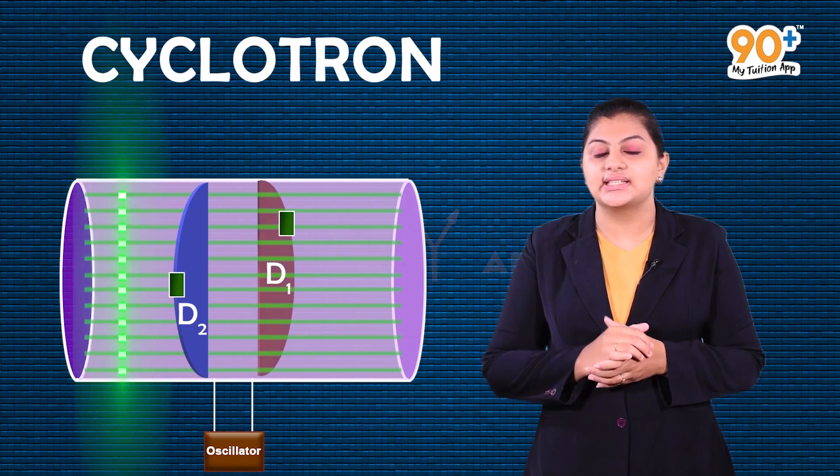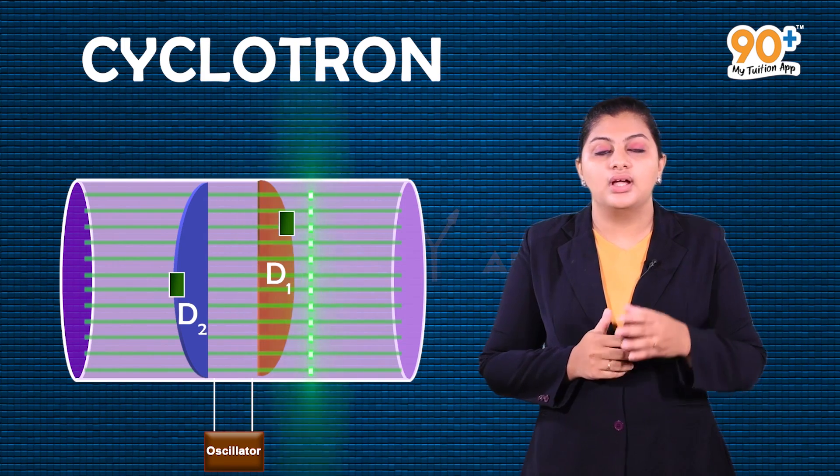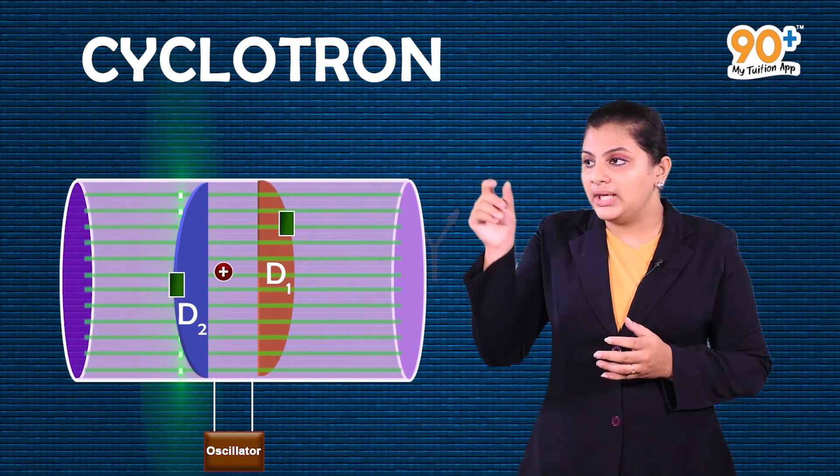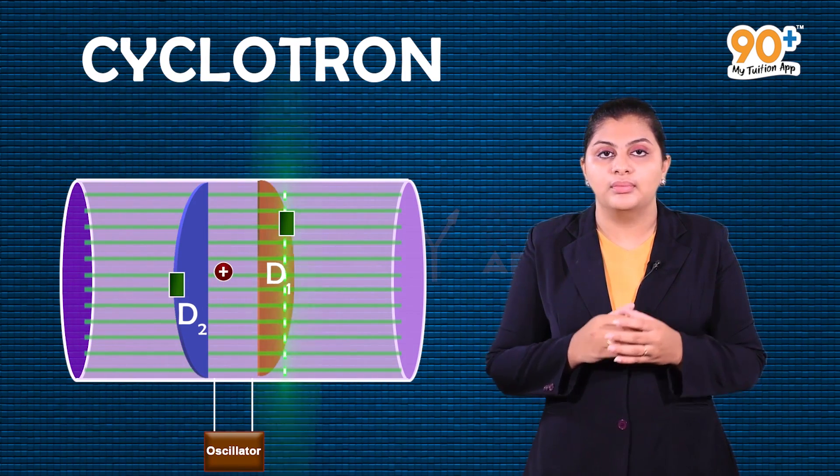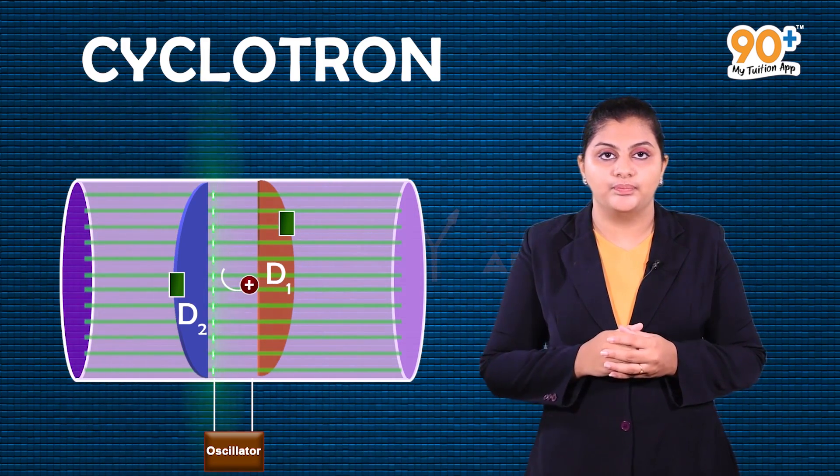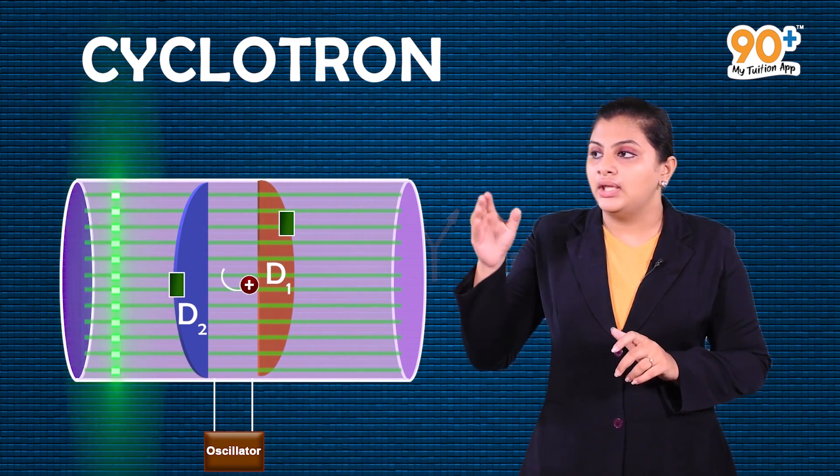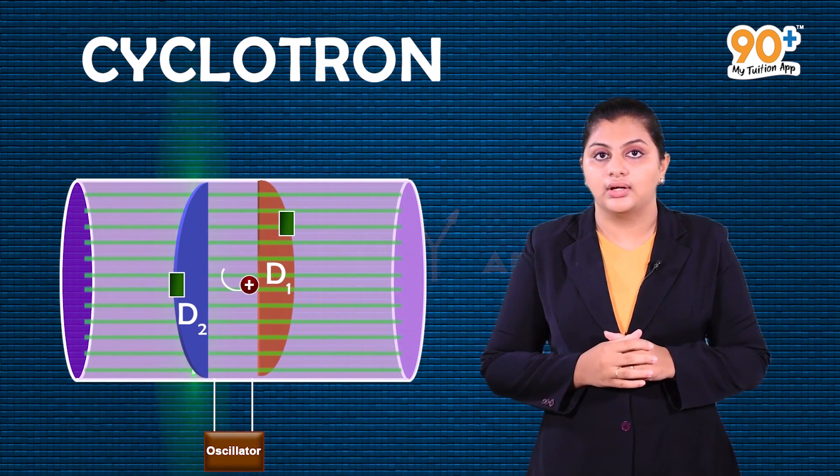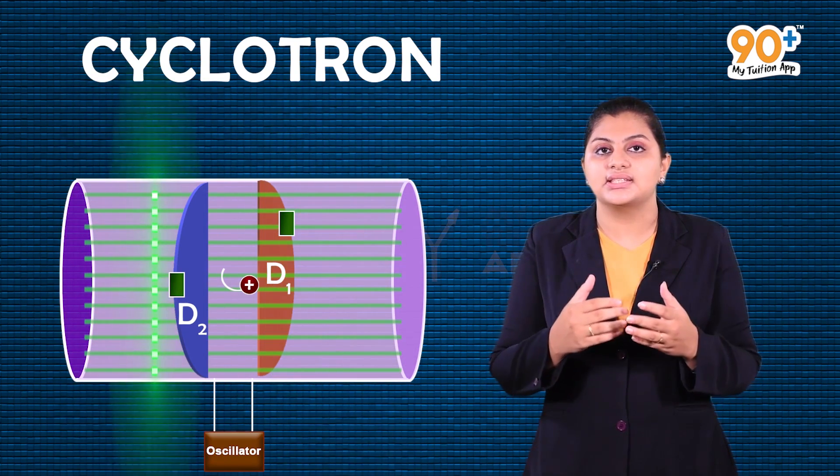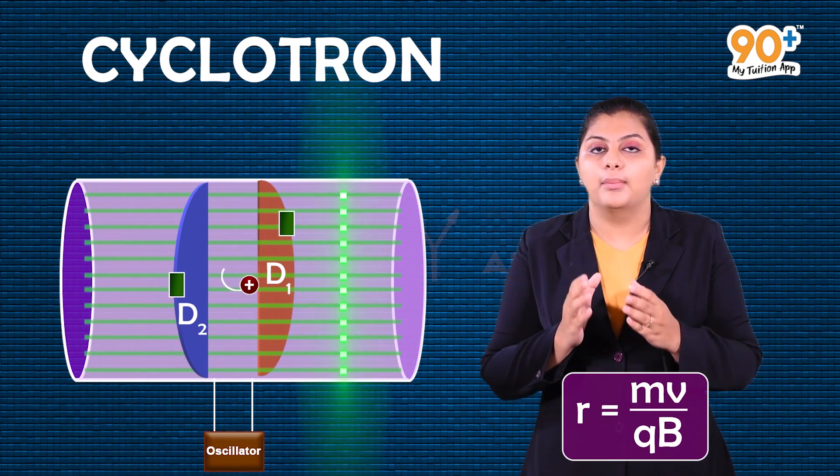In the first case, D1 is negative. The ion from the source in the gap accelerates and moves in a circular path with radius r equal to mv divided by qB.